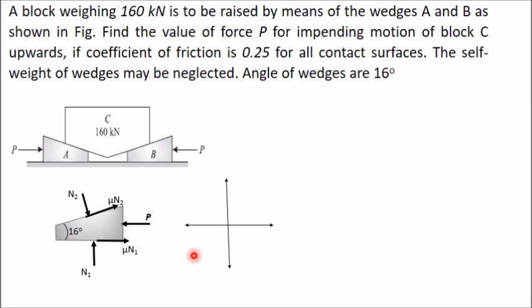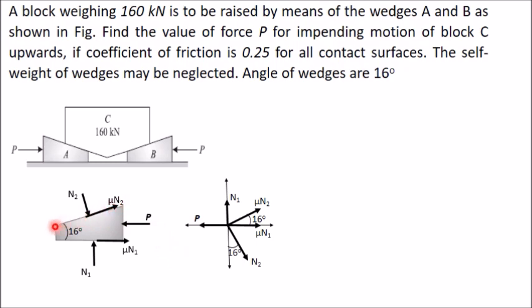All these forces are transferred to a reference x-y axis. In the reference axis: P acts left; N1, μN1, N2, and μN2 are all shown. The direction of μN2 is along the wedge surface, which makes 16 degrees from horizontal. Since μN2 and N2 are perpendicular, N2 also makes 16 degrees — so the angle of N2 from the y-axis is 16 degrees.